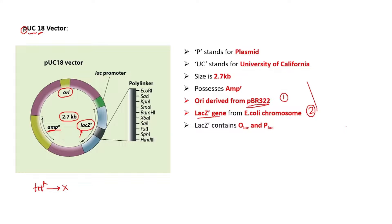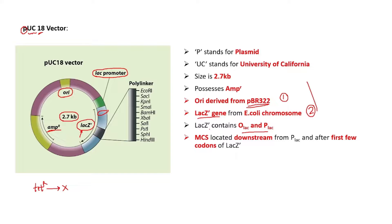In order to be functional, the lacZ gene needs a promoter and an operator, just like the lac operon. This lacZ gene contains a lac promoter located upstream of the lacZ gene, and a lac operator region located somewhere within the lacZ gene. There are also certain MCS, or multiple cloning sites — sometimes called the polylinker region — which is located within the lacZ gene, downstream of the lac promoter.